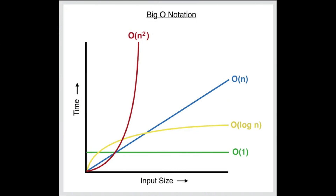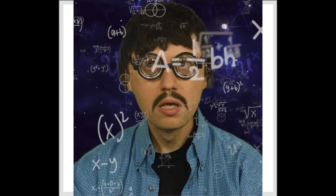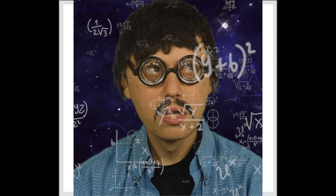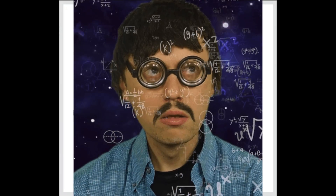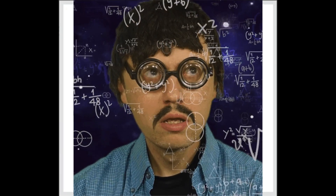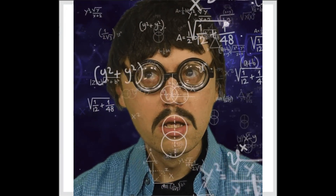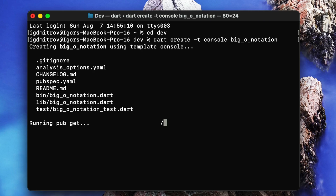Big O notation is used to classify algorithms according to how the runtime grows as the input size grows — simply, how our algorithm will perform if we increase the number of elements. Let's start with preparation.